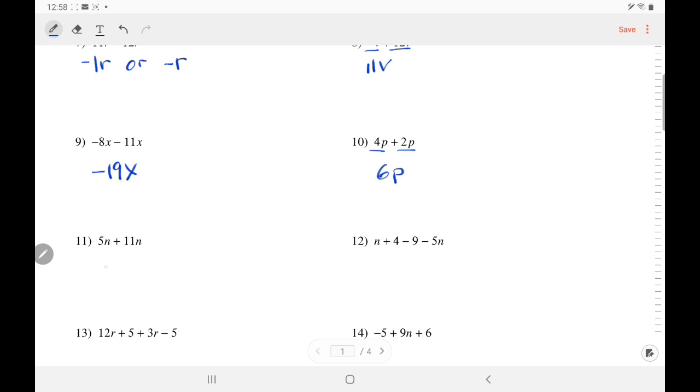5 plus 11, that's 16n. Here, we'll add the invisible 1n and the negative 5n. 1 plus negative 5 is negative 4n. We use the rule, 5 minus 1 is 4, and we take the sign of the stronger number.